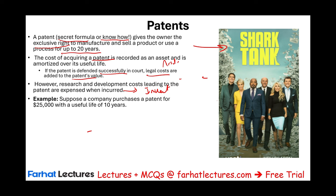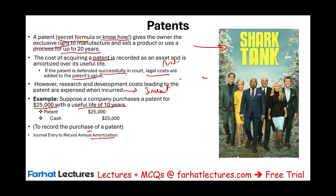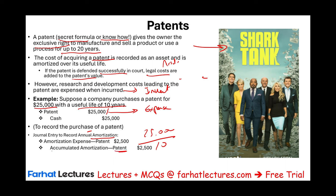Suppose a company purchased a patent for $25,000 with a useful life of 10 years. You debit the patent, which is an asset, and credit cash. Then you record amortization. Amortization is the equivalent of depreciation and depletion — it is cost allocation. You take the $25,000 and expense it using the straight-line method: $25,000 divided by 10 years. Each year you expense $2,500 and credit either the patent itself or accumulated amortization — patent, to amortize it over 10 years.